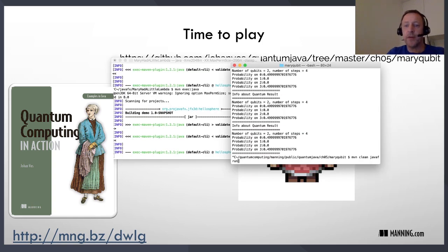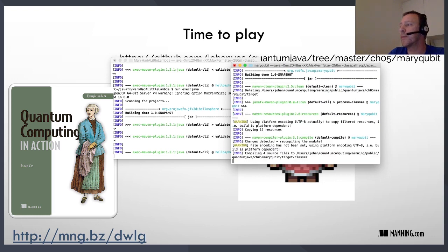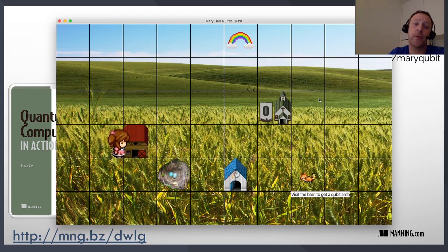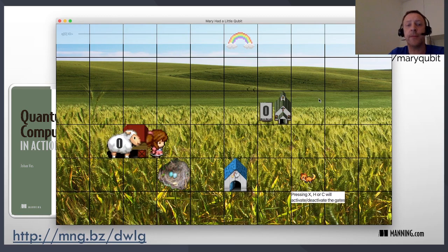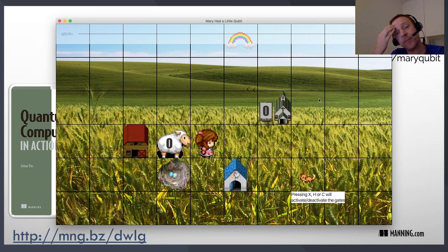I will now start the Mary had a little qubit game and we will show some of the code. So this is Mary walking around there. She can still go to the barn. But when she goes there she will get only one sheep at a time just to make things easier. I changed the sprites, or at least the meaning of the different parts in this game. For example, you see at the bottom right that you can press X, H, or C to activate or deactivate gates.